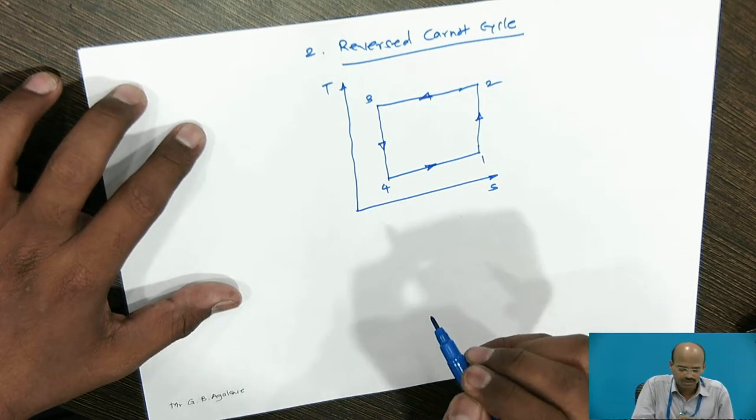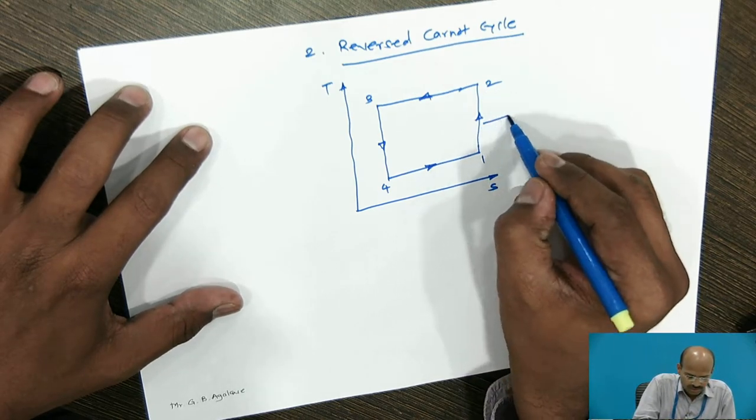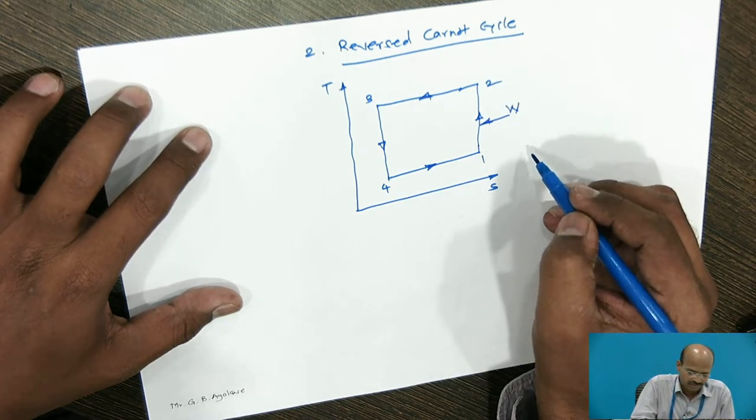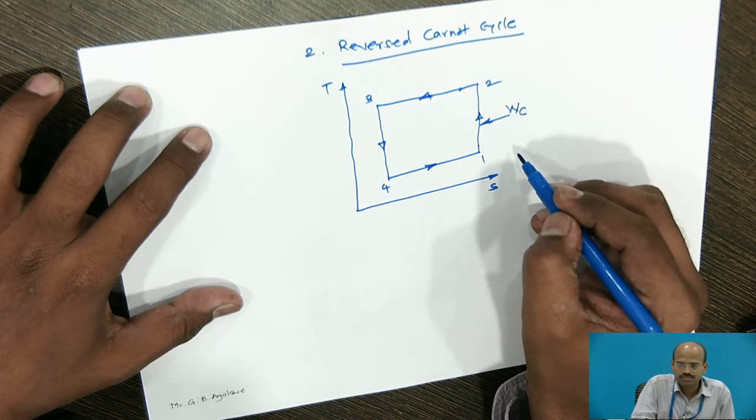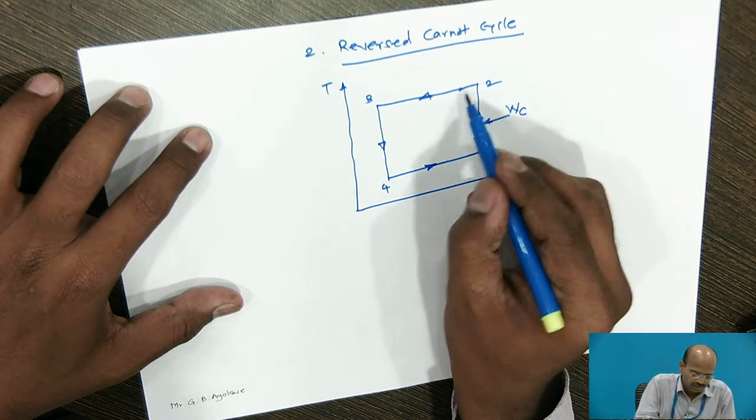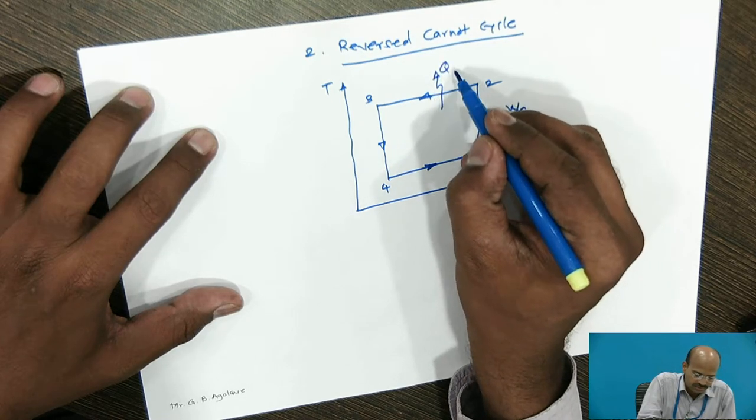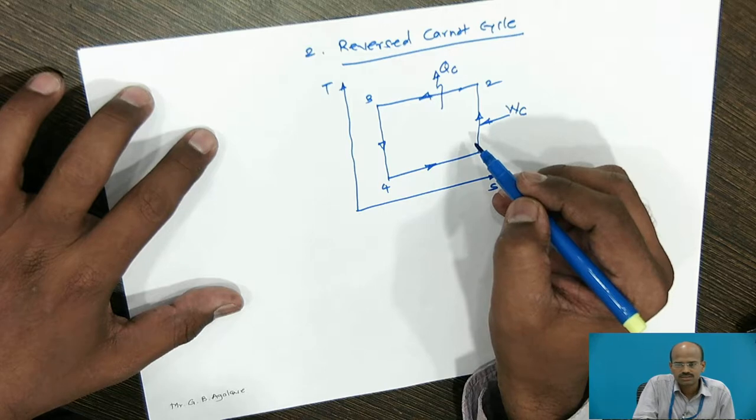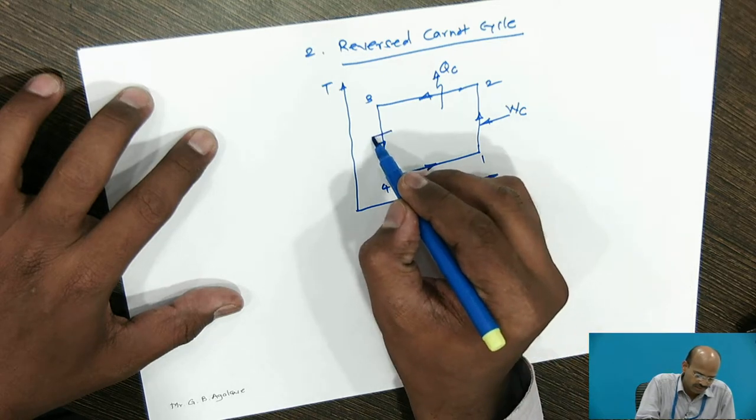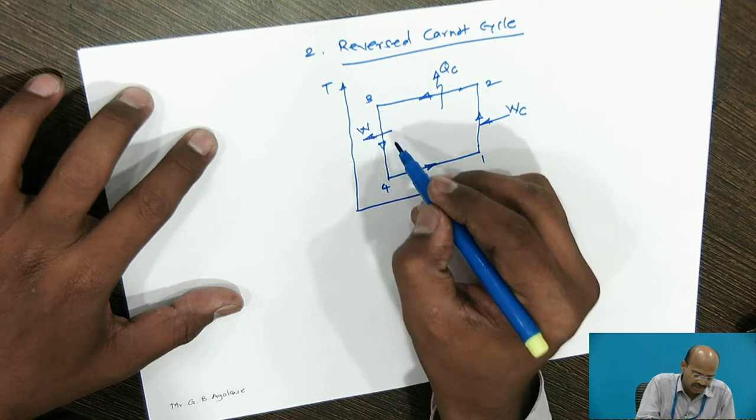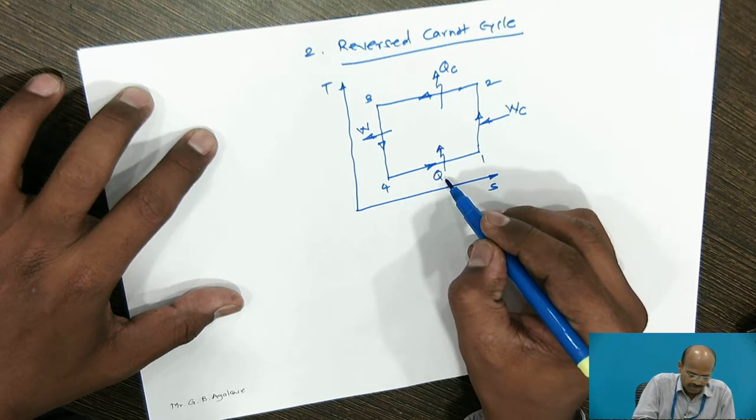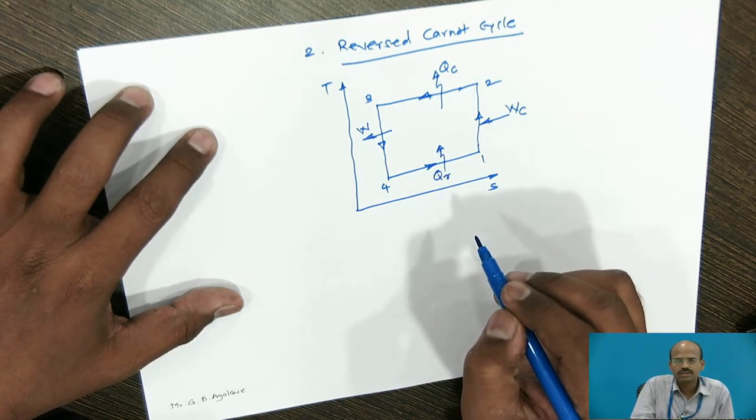In this cycle, 1 to 2 is not the work developed process. The work is required to drive the compressor. The work will be consumed by the compressor during process 1 to 2. Obviously, it is isentropic compression process. Process 2 to 3 is the heat rejection process. Here we will consider condenser because in the refrigeration condenser is used to reject the heat. During process 3 to 4, there may be work development depending upon the type of the cycle. Here, the work will get developed and process 4 to 1 is the heat absorption process. Here, we are calling it as a refrigerating effect.